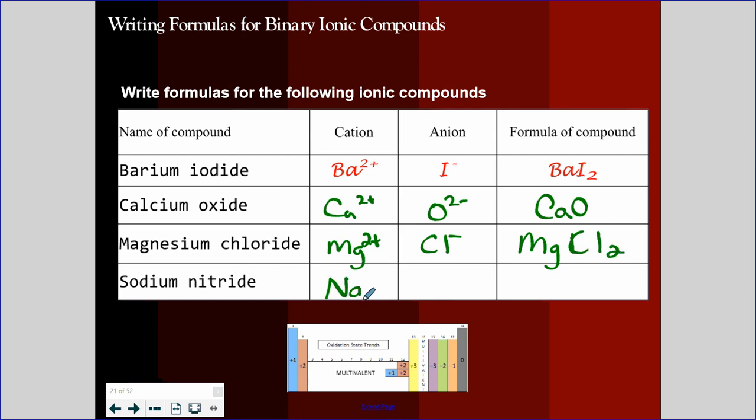Sodium nitride. Sodium one plus. Nitrogen comes from group 15, the purple group here at the top. That group tends to take on a negative three charge. That means it needs to gain three electrons. Now, if nitrogen needs to gain three electrons, sodium only has one to offer. I'm going to need three sodiums to handle nitride. So it's going to be Na3N.